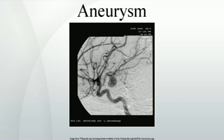Aneurysms may be classified by type, morphology, or location. A true aneurysm is one that involves all three layers of the wall of an artery. True aneurysms include atherosclerotic, syphilitic, and congenital aneurysms, as well as ventricular aneurysms that follow transmural myocardial infarctions. Aneurysms that involve all layers of the attenuated wall of the heart are also considered true aneurysms.